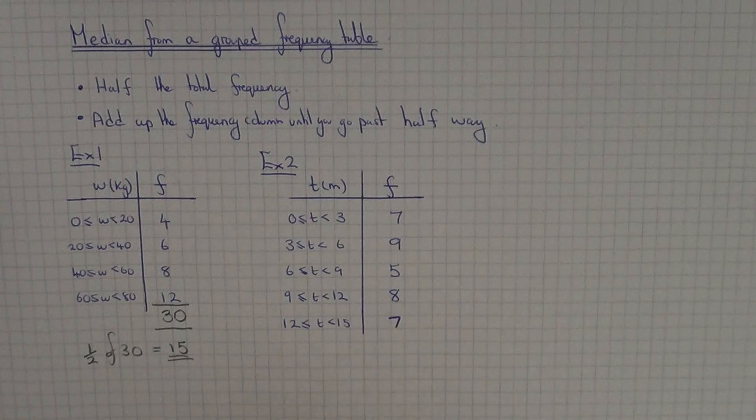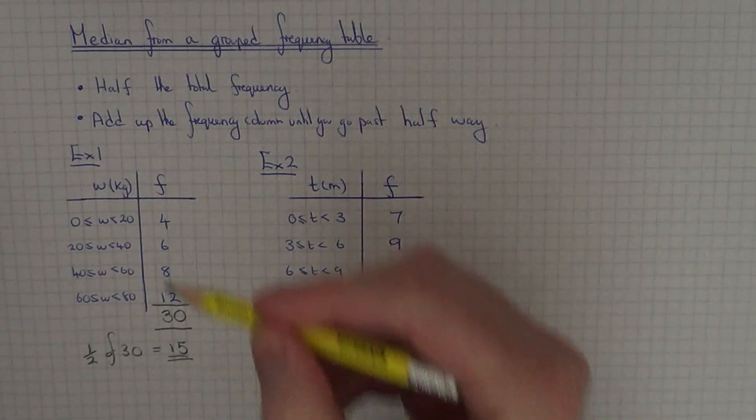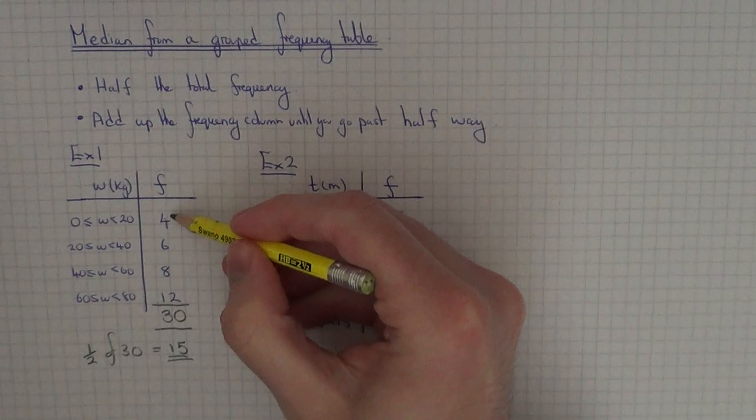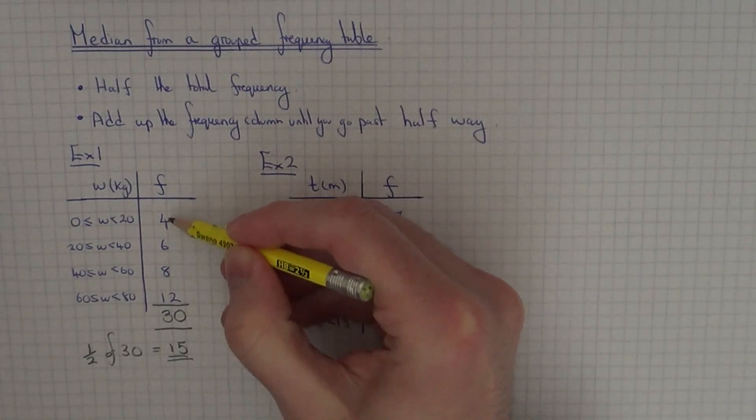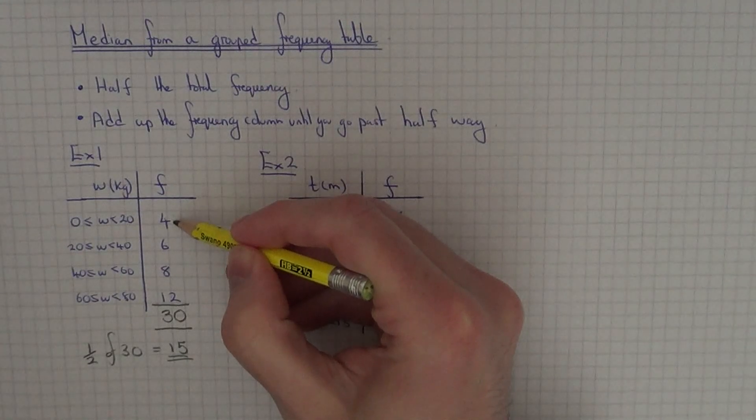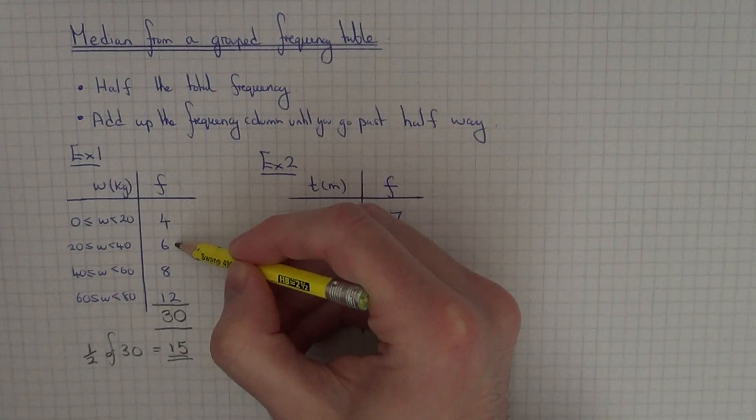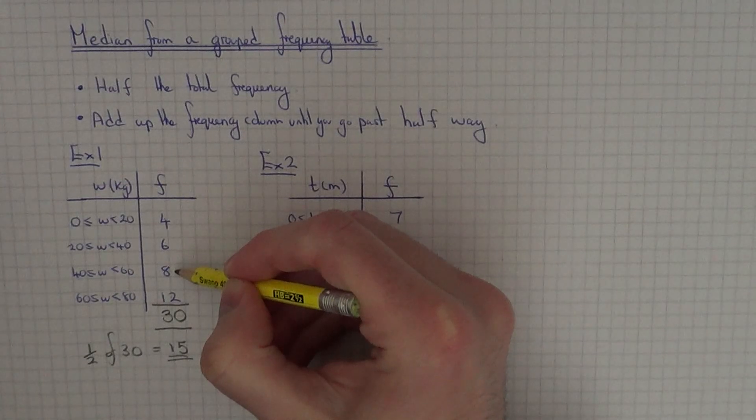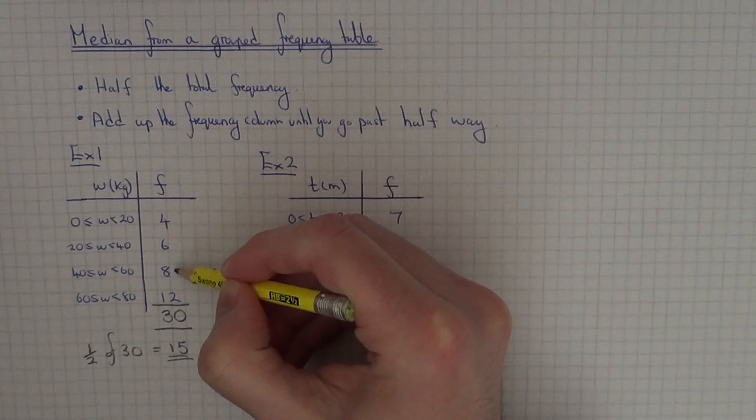This tells us that the median occurs on the 15th person. If we go back to our frequency column, all we need to do is add up the frequency until we go past 15. So 4 add 6 is 10, so we haven't gone past 15 yet. If we add on 8 that takes us to 18, so we've gone past the 15th person here.